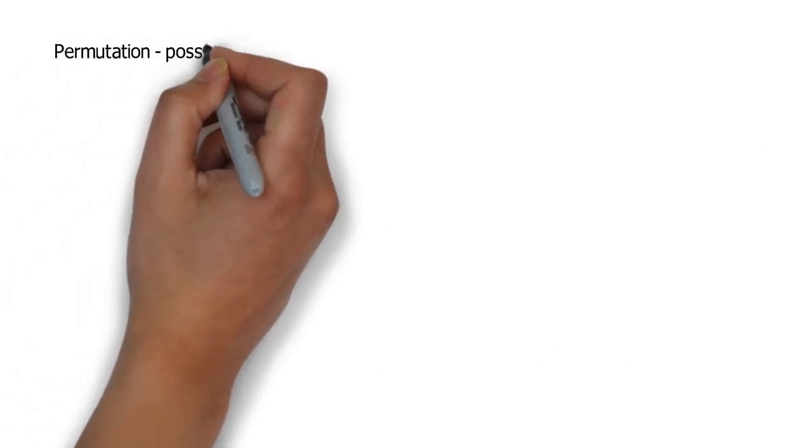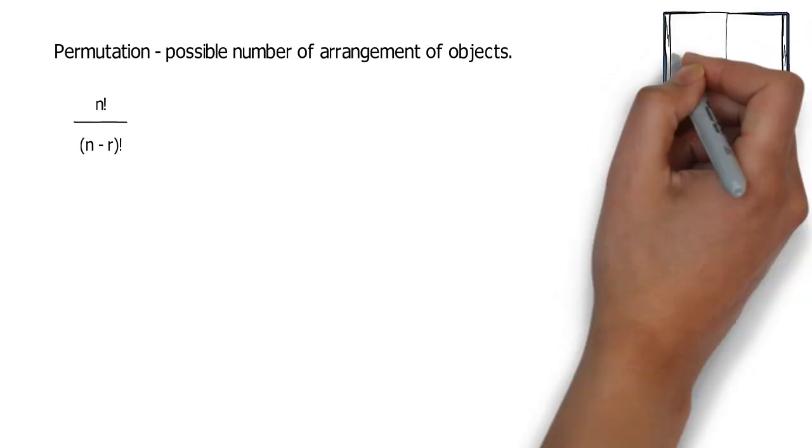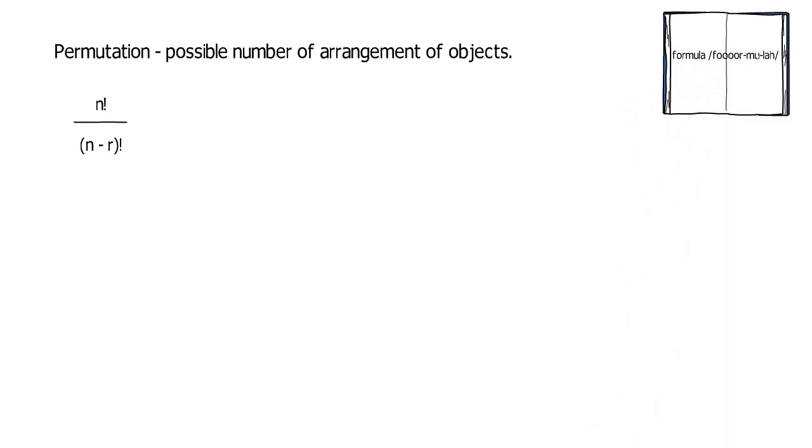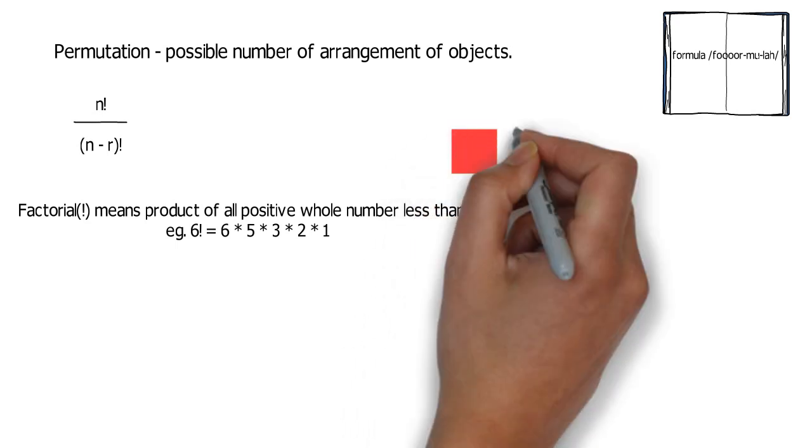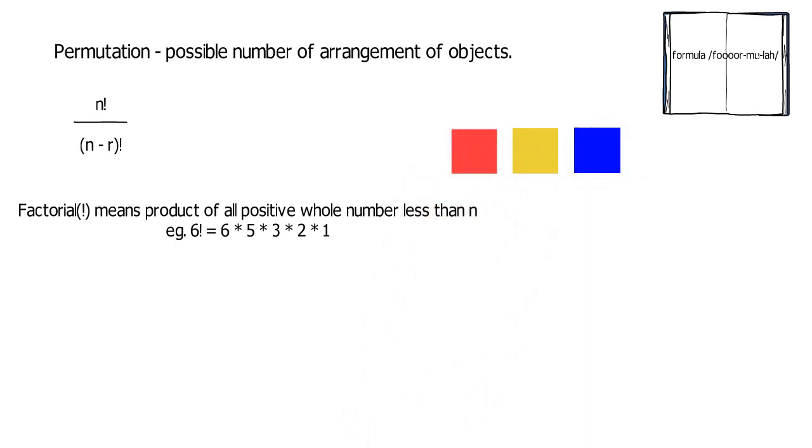In number 5, we're gonna be using permutation. In permutation, possible number of arrangements of objects is what we're asking. We can use the formula here, it should be pronounced formula based on my dictionary. But, never mind. So, the factorial of n over the factorial of n minus r. But, there is a better way of conceptualizing permutation. We can utilize the act of simple way of counting. So, let me show it.